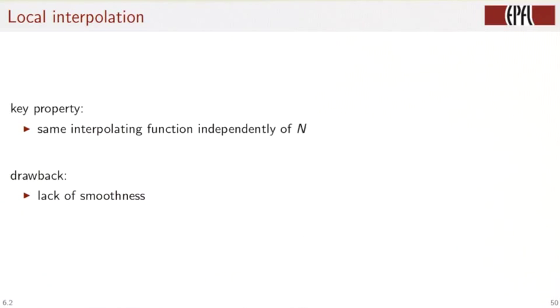The key properties of these local interpolators are: it's the same interpolation function independently of n and independently of location. Another advantage is the short support of the interpolation kernel. The drawback is the lack of smoothness.